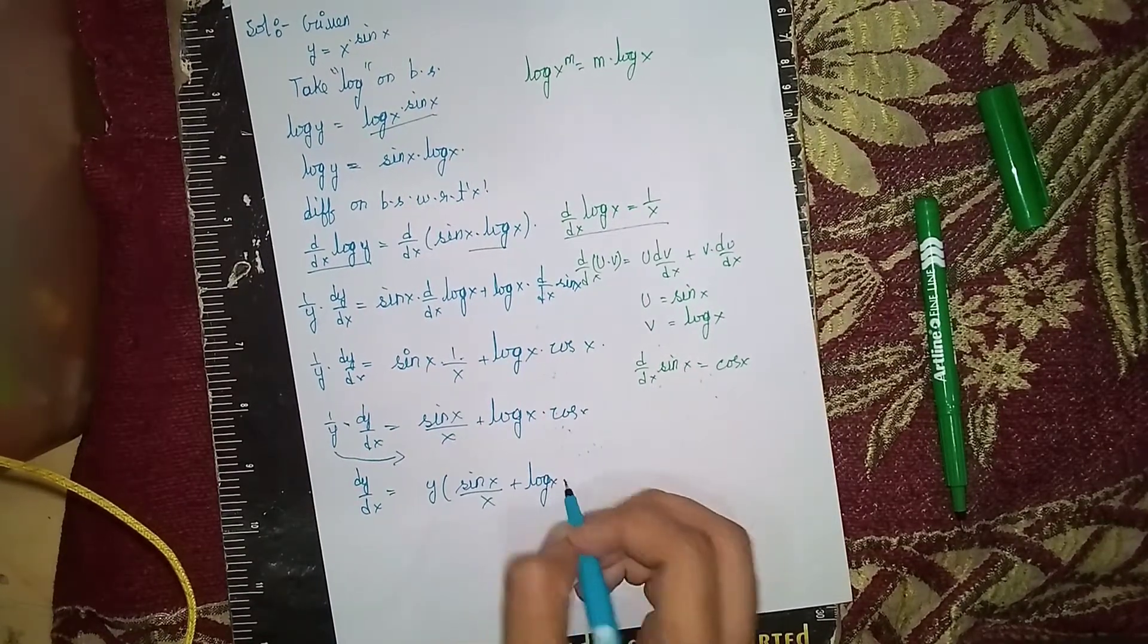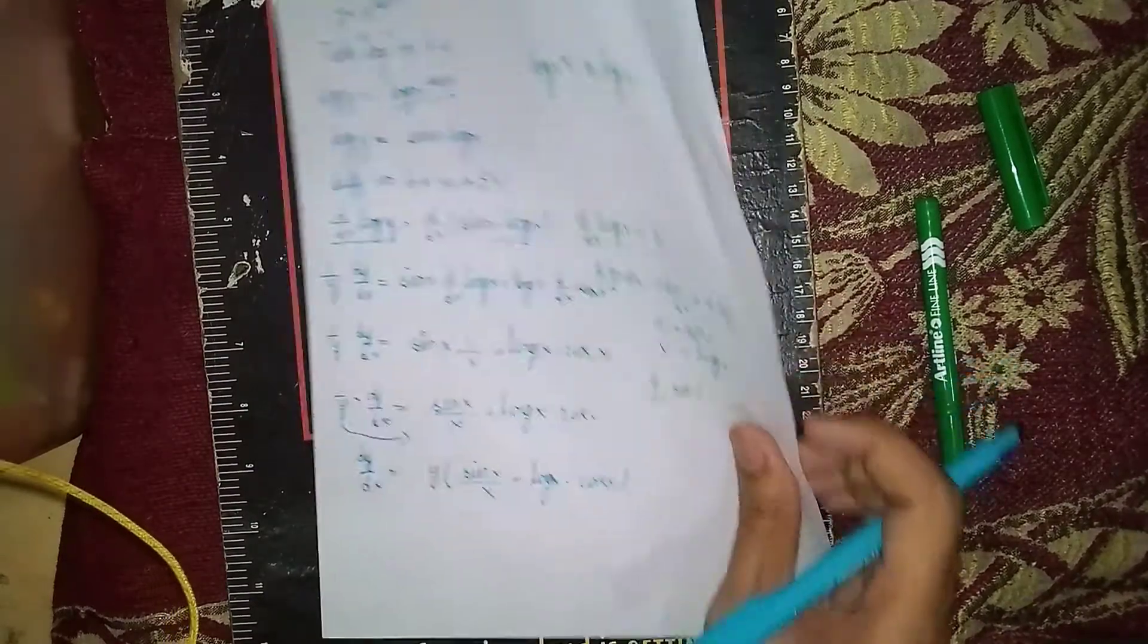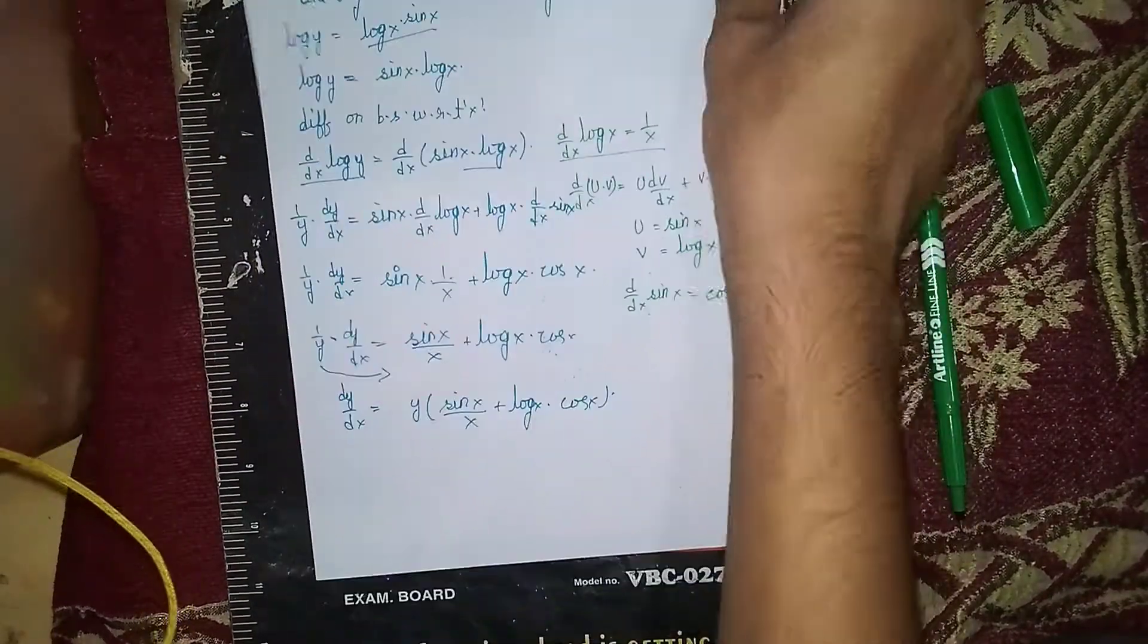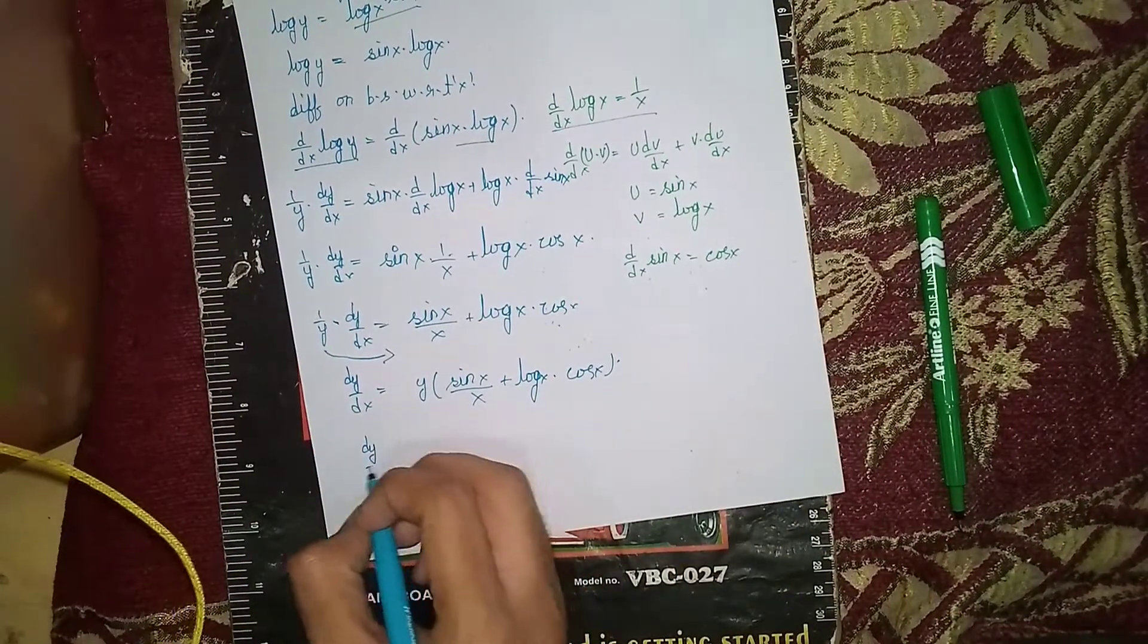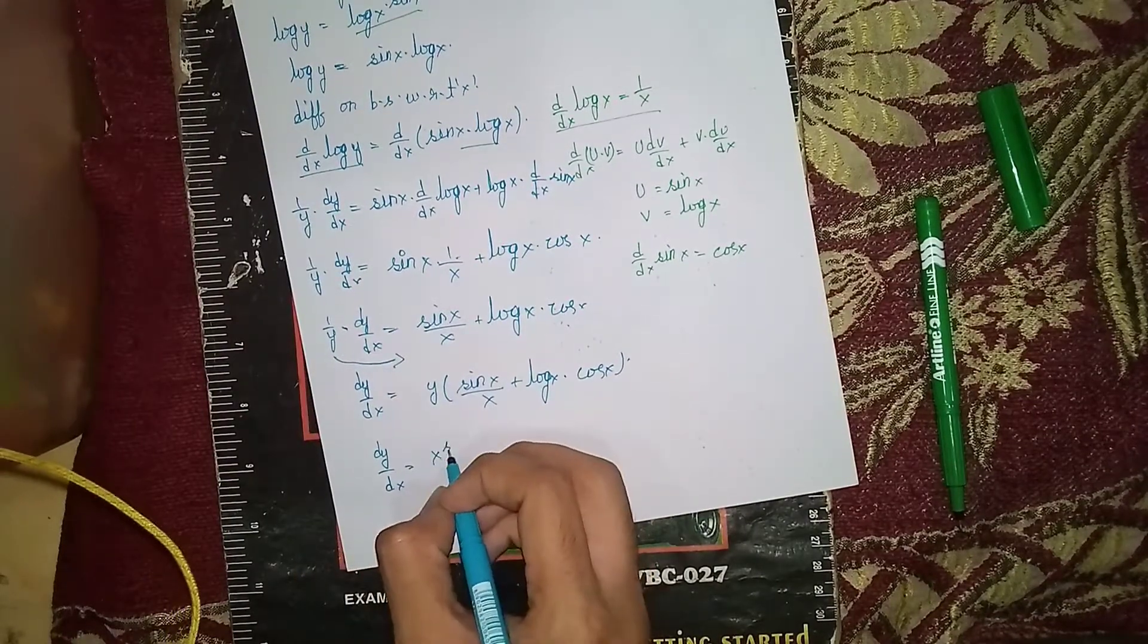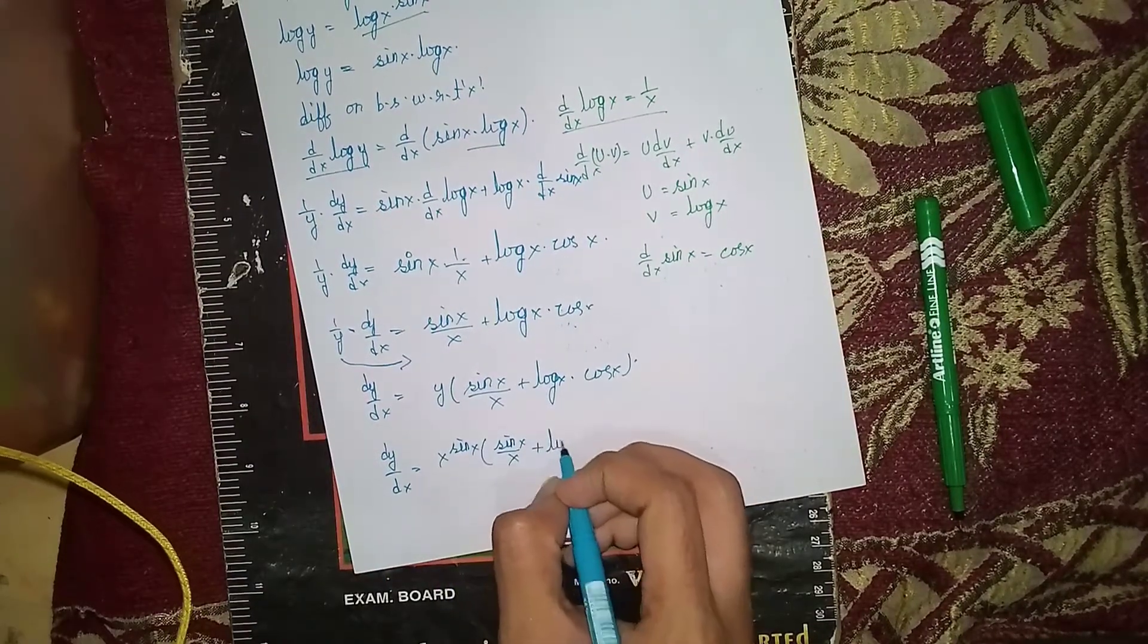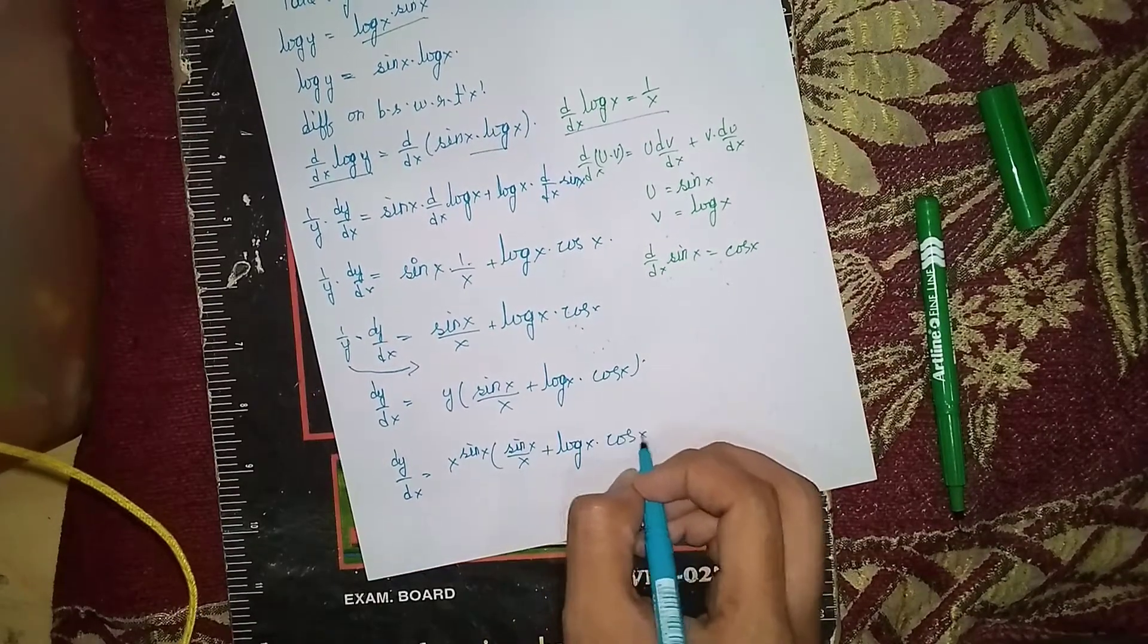dy/dx equals x to the power sin x times [sin x by x plus log x into cos x]. So what is the answer? dy/dx is equal to x to the power sin x into [sin x by x plus log x into cos x]. This is the answer.